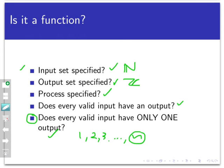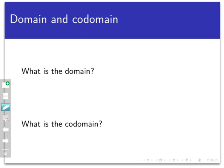I've specified the input set, the output set, and told you what to do in terms of directions and process. Every input has an output, and every input has only one output. Now let's examine some particulars about this function. The domain is easy to see — it's the set of all natural numbers. The codomain, as we've specified it, is the set of all integers.